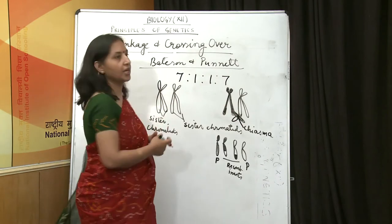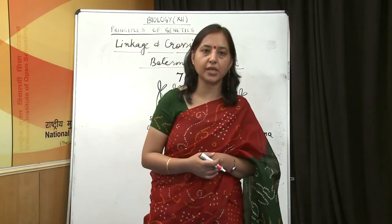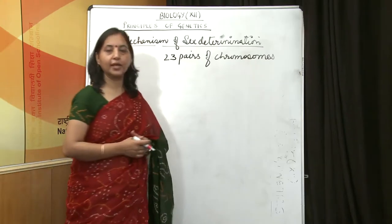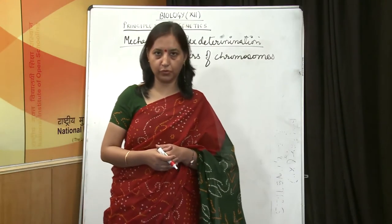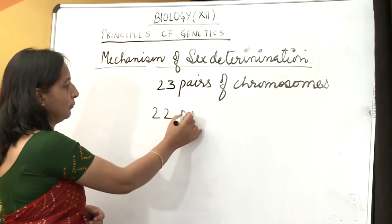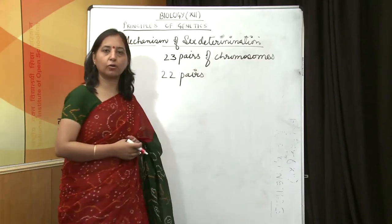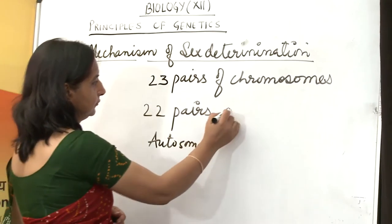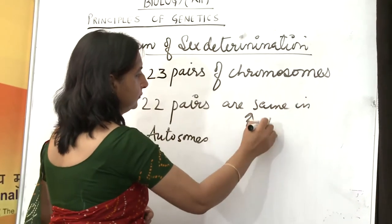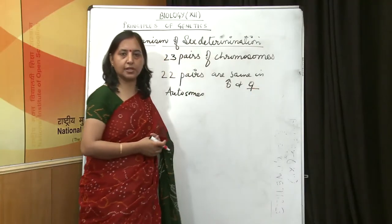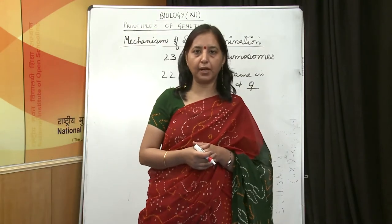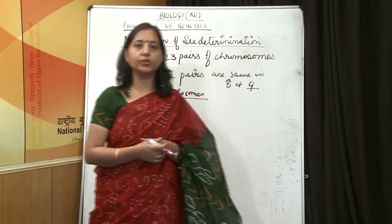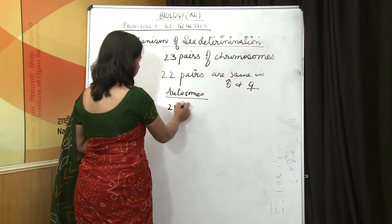Now let us talk about the mechanism of sex determination — not only in human beings, but in birds, insects, and honeybees as well. In human beings, there are 23 pairs of chromosomes, out of which 22 pairs are similar in both male and female, and these are called autosomes. There is only a difference in one pair of chromosomes, known as the sex chromosome, which is the 23rd pair.